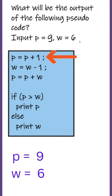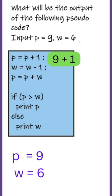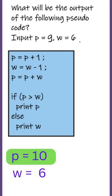In the first line, we have to perform p plus 1. Since p contains 9, it will be 9 plus 1 and the result will be 10 and that result will be stored in p. So now p contains 10.